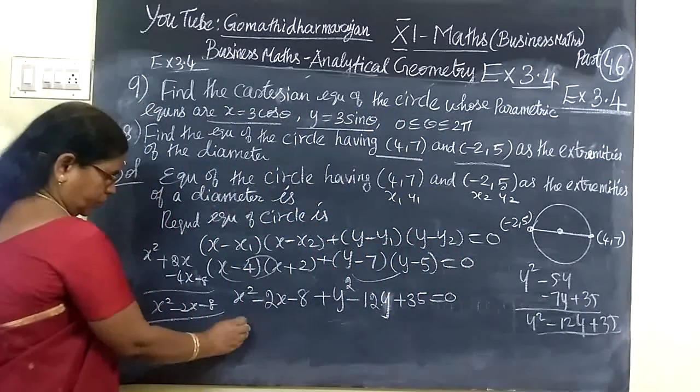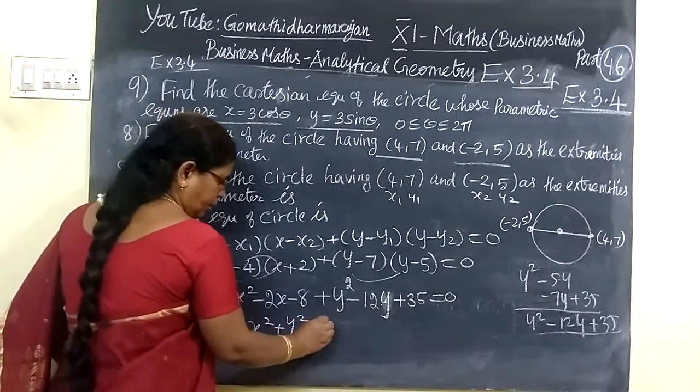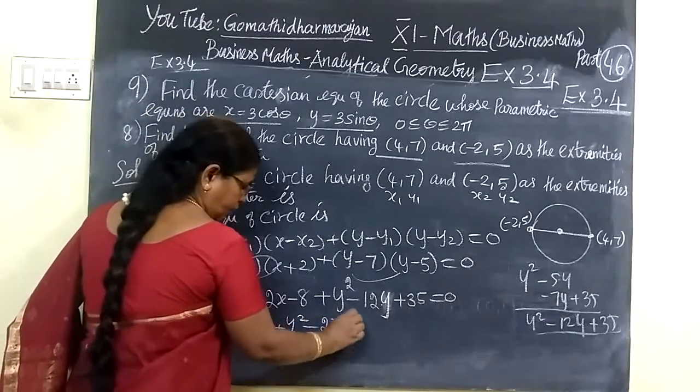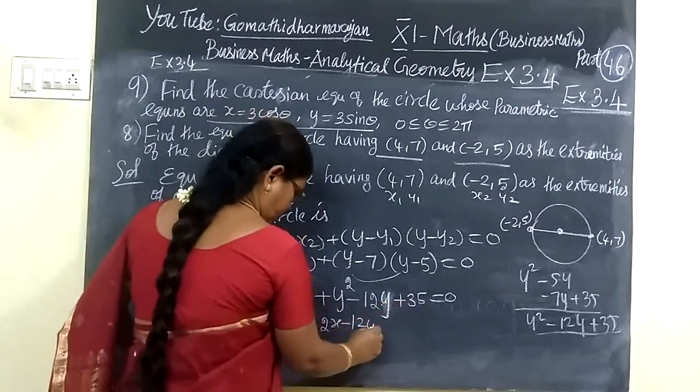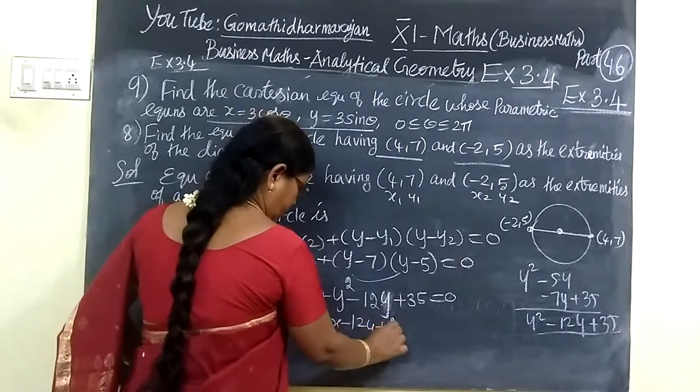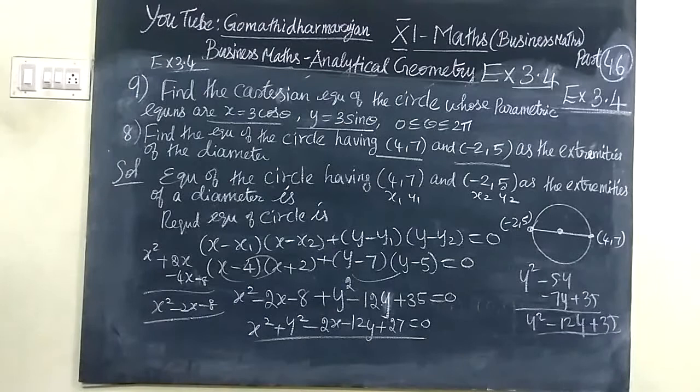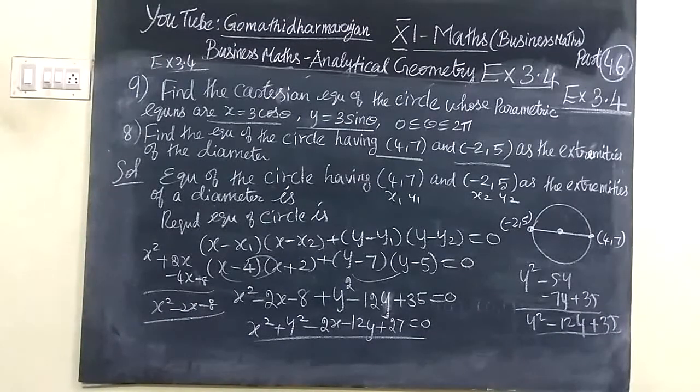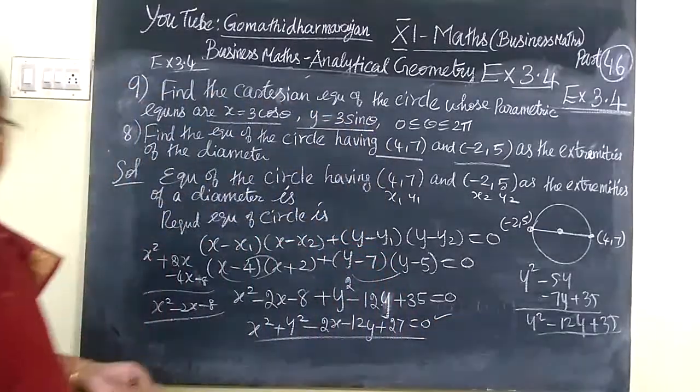Write in order: x squared plus y squared, then x term, then y term, then constant term. So that is the answer: x squared plus y squared minus 12y plus 27. So this one is the correct answer.